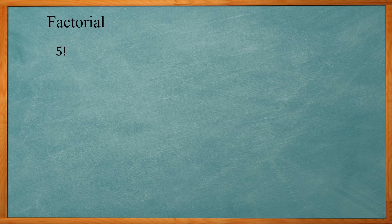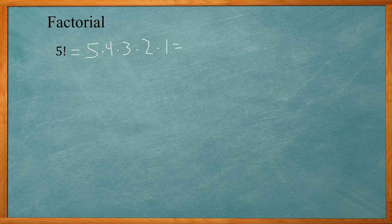You might encounter a number with an exclamation point behind it — that means it's a factorial. For 5 factorial, you simply take 5 and multiply it by all the numbers below it down to 1: 5 times 4 times 3 times 2 times 1. So 5 factorial is equal to 120.